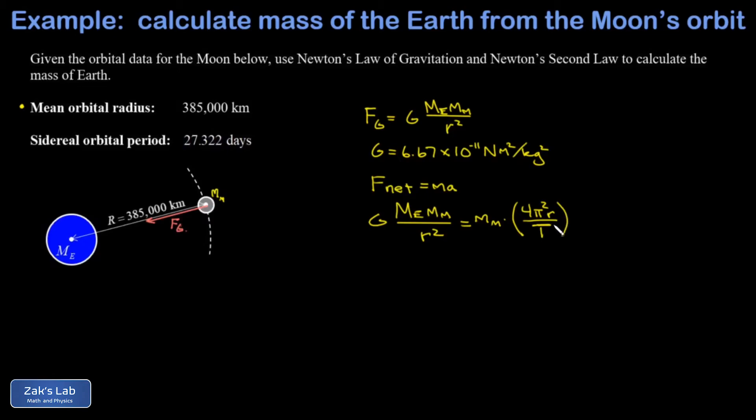But it's more direct to phrase the centripetal acceleration in terms of the period, and that's 4π²r over T². And this is the moment where the mass of the Moon cancels out, so we realize it doesn't matter what the mass of the satellite is. It could be anything, it could be a piece of space junk. If you observe its orbit around the Earth, you're going to be able to calculate the mass of the Earth from that.